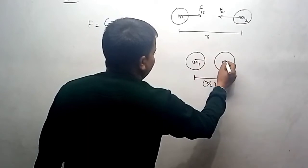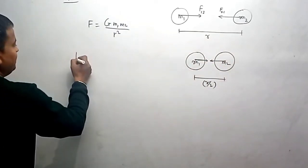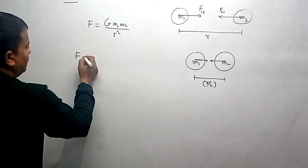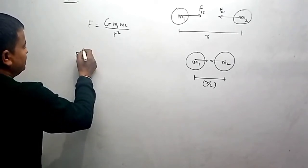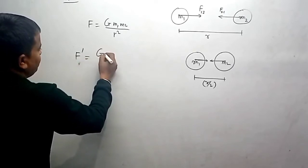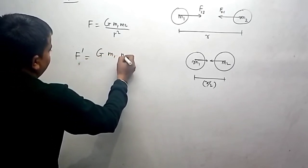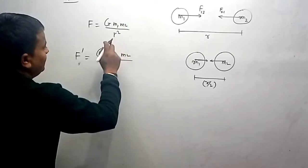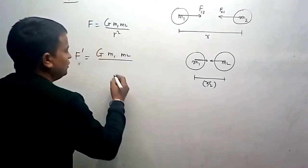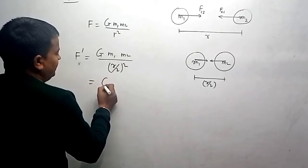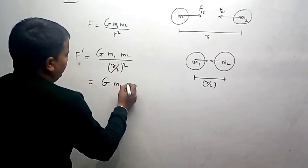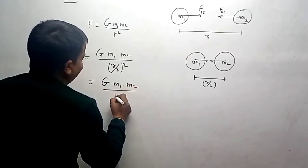So obviously force, we can say F dash, this is G m1 m2 divided by r square. R is r by 2, so it becomes r by 2 whole square, right? This can be written as G m1 m2 divided by r square.